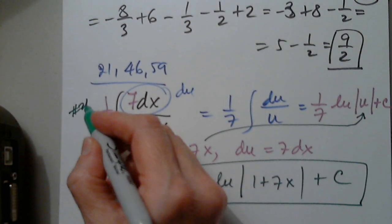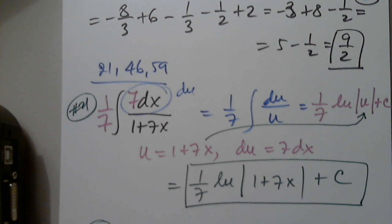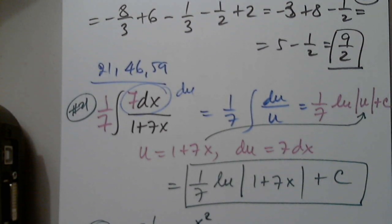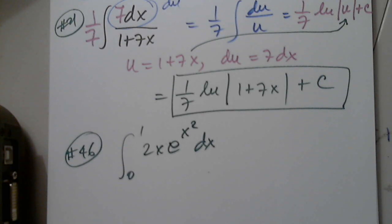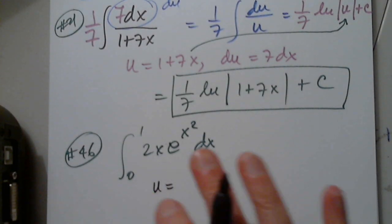Okay, let's see 46. This was 21. Let's see 46. Why did I select 46? Here it is. The integral from 0 to 1, from 2x e to x squared dx. Would you like to suggest anything here? Any potential substitution?